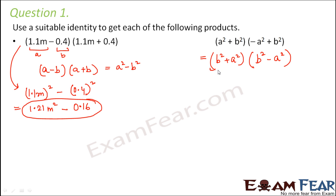When you look at it, this is your a of the standard identity and this is your b. So this is of the form (a + b)(a - b). As per the identity, it can be written as a² - b². So a is b² and b is a², so this will be equal to b⁴ - a⁴.